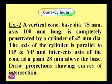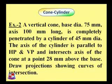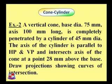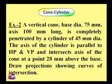Second problem: cylinder and cone. A vertical cone with base diameter 75 mm and axis 100 mm long is completely penetrated by a cylinder of 45 mm diameter. The axis of the cylinder is parallel to both the HP and VP and intersects the axis of the cone at a point 25 mm above the base. Draw the projections showing curves of intersection. Two solids are given — cone and cylinder — with dimensions of both provided.